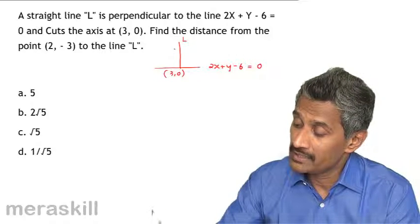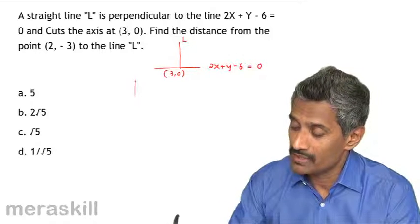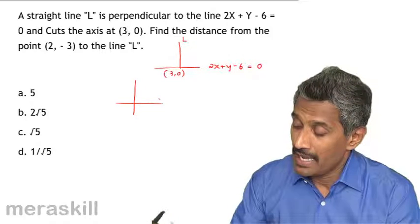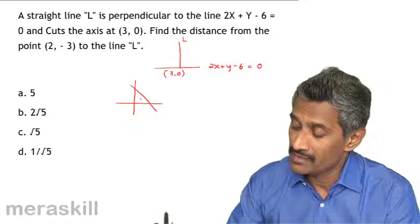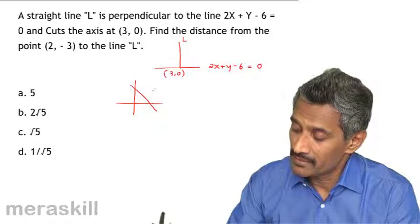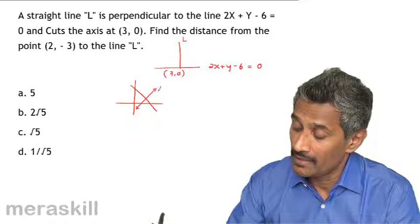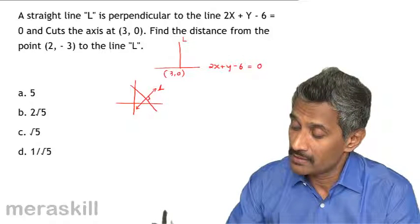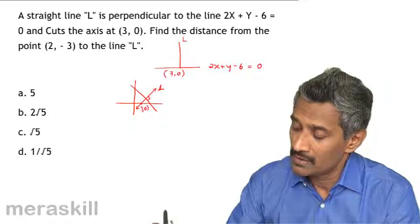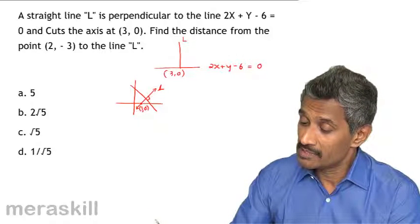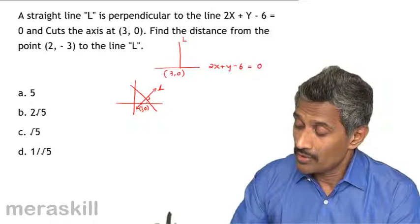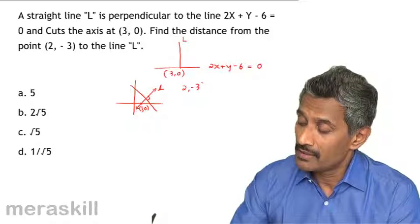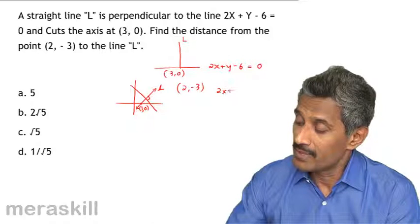Suppose you have this line over here, and there is a line — say 2x + 3y — and there is a line which is perpendicular to it. This is line L, perpendicular to that line, and it cuts the x-axis at (3, 0). Find the distance from the point (2, -3) to the line L.